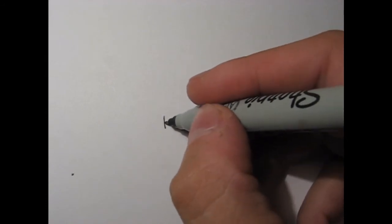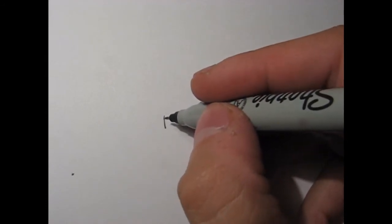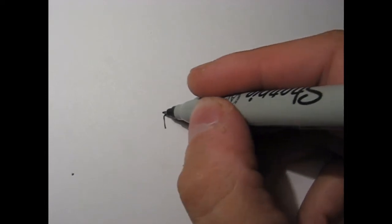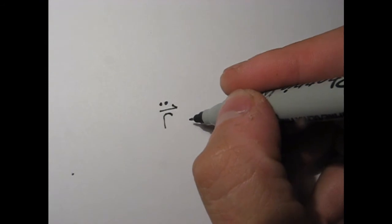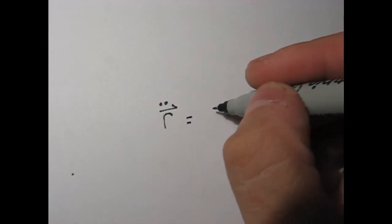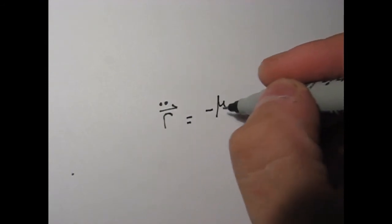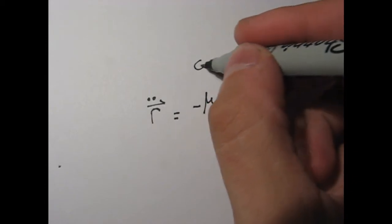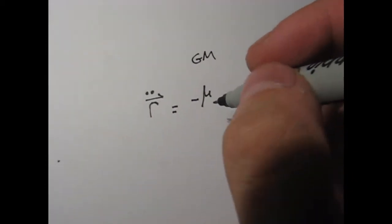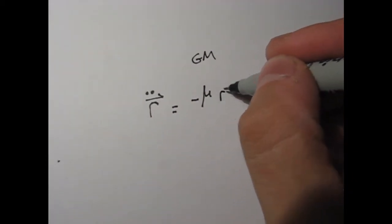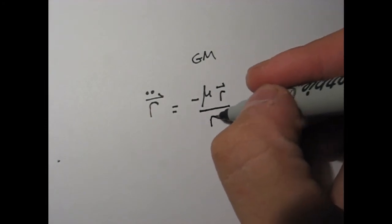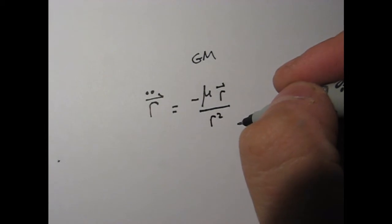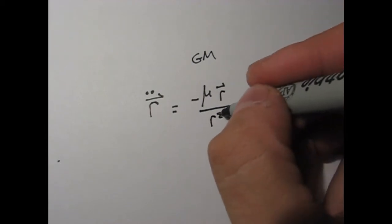So last time what we had was the two-body equation of motion. That was the acceleration vector R double dot, is equal to this parameter mu — which is GM — times the radius vector separating the two, divided by the magnitude of that cubed.